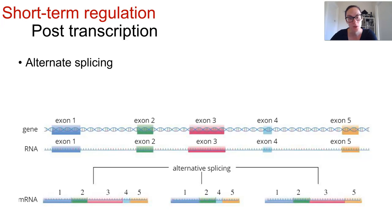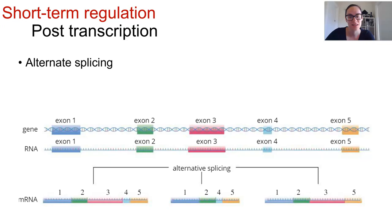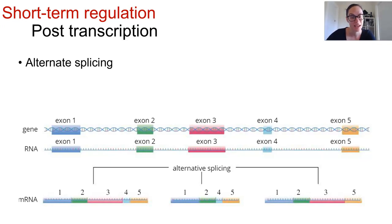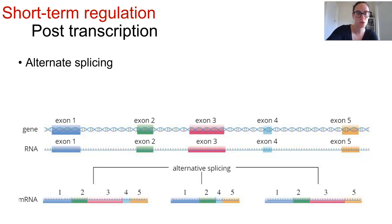It's also actually possible to splice out exons as well. This leads to a variety of combinations of exons in the resulting mature mRNA, which means that some genes are actually capable of producing multiple varieties of proteins depending on what combination of exons are included.